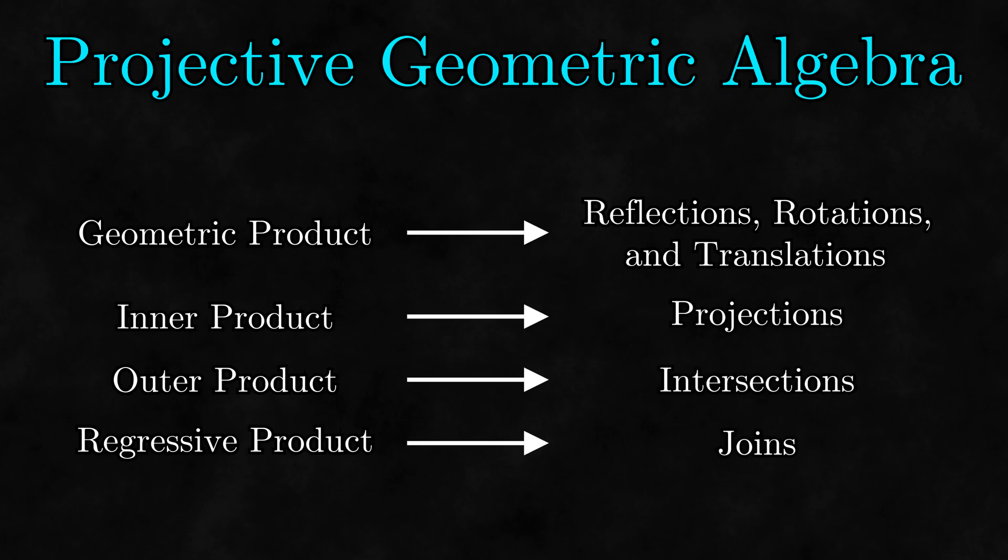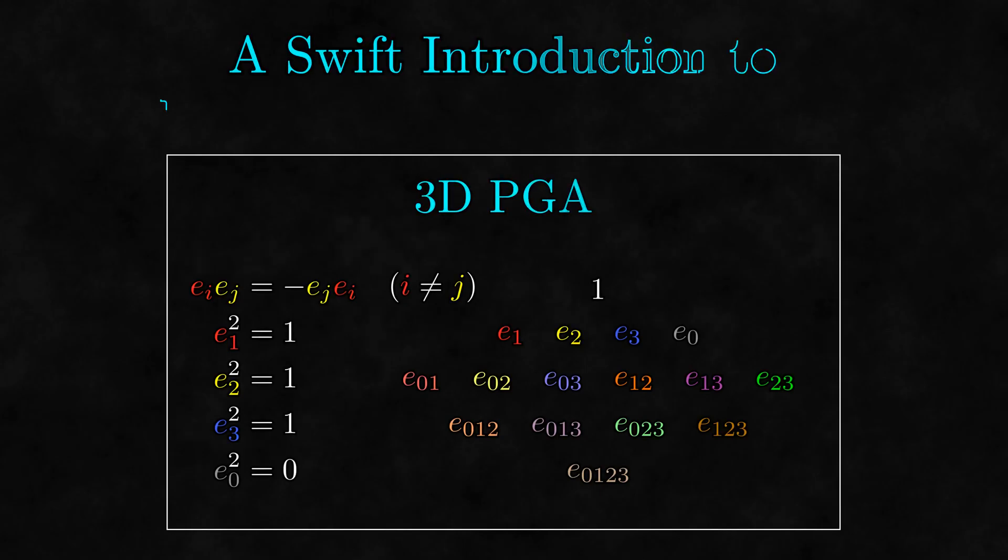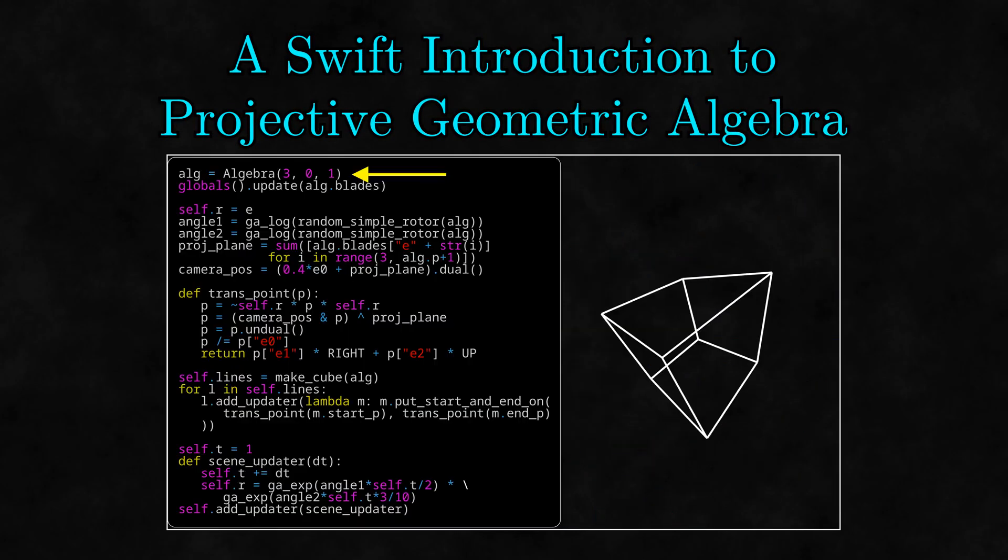However, at this point in From Zero to Geo, I'm not expecting you to know about any of these operations yet, so we'll have to stop things here and wait until chapter 5 to keep going. For those who can't wait, I have considered making a swift introduction to PGA which would be similar to my original swift introduction to geometric algebra, but who knows if that will ever get made. Just kidding, it's already done! You can find the link in the description.